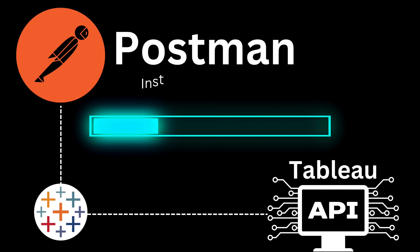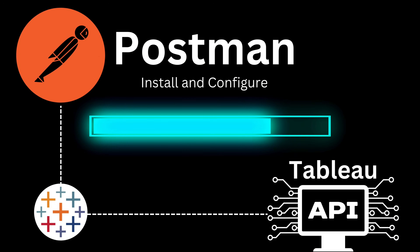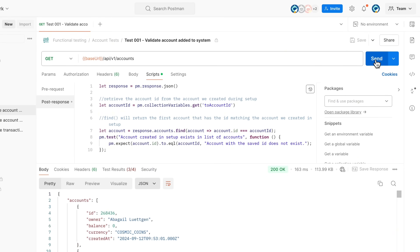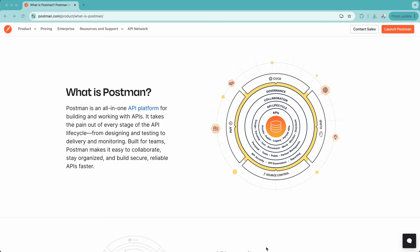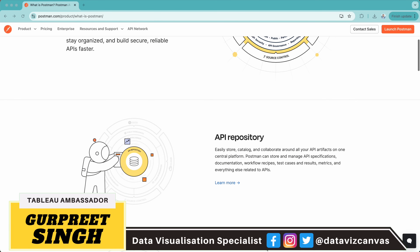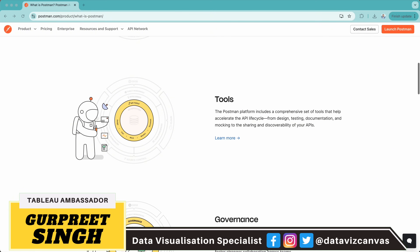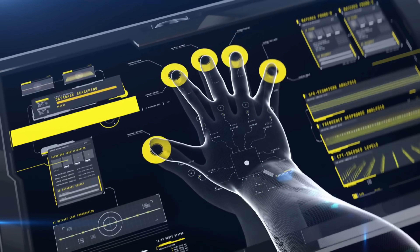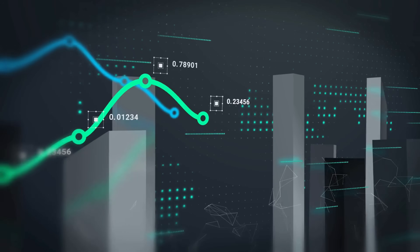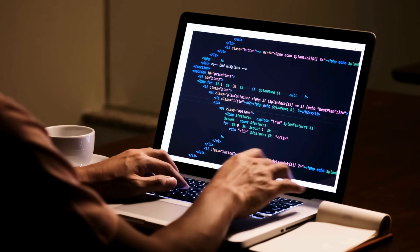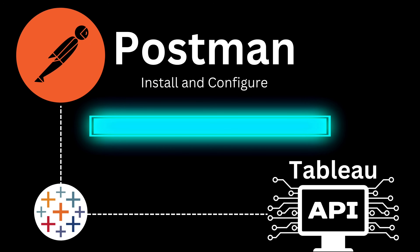Hi everyone. In today's tutorial, I'm going to walk you through how to install and configure Postman to interact with Tableau APIs. If you are new to APIs, you might be wondering what is Postman. It's a free tool that lets you test and explore APIs without writing a single line of code. Whether you are handling authentication or querying data, Postman makes it easy to work with Tableau APIs, all without writing complex code. So let's get started.